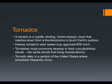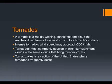A tornado is a rapidly whirling, funnel-shaped cloud that reaches down from a thunderstorm and touches Earth's surface. Intense tornadoes can have wind speeds of up to 500 kilometers per hour. They most commonly develop in cumulonimbus clouds — the very same clouds that produce thunderstorms. Tornado Alley is the section of the United States where most tornadoes occur, in the central part of the country.